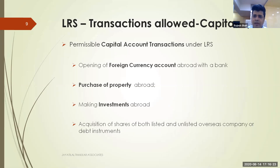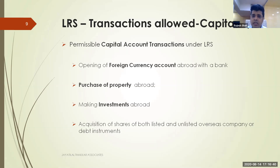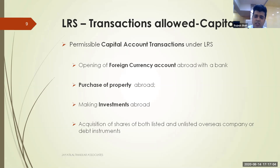The second category is purchase of property abroad. You can also open a bank account abroad, send $250,000 every year, accumulate funds over three to four years, and then use it for that purpose. Making investments abroad is the third category — a capital account transaction. Acquisition of shares of listed or unlisted companies is allowed, as is investment in debt instruments. There is a thin line between a debt instrument and a loan — banks will not allow remittance labeled as a loan, but will allow it as a debt instrument.